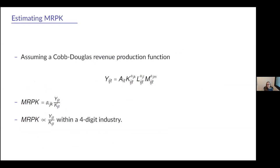For our MRPK measure, we assume a Cobb-Douglas revenue production function, where A is TFPR. Under this function, MRPK equals the capital output elasticity alpha times revenues over capital. If we assume alpha is the same for all firms in a five-digit industry, MRPK is proportional to revenues over capital within the industry. So we use revenues over capital as our proxy for MRPK.